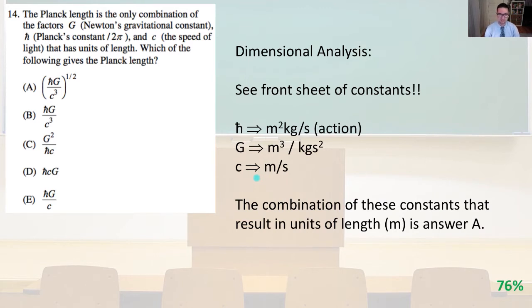You can see H-bar is going to be meters squared, kilogram per second. That's our action. G is going to be meters cubed per kilogram second squared. And C is meters per second. So combine all these in the way that gives length, and the only way to do it, the combination of these constants that results in units of length, is answer A.